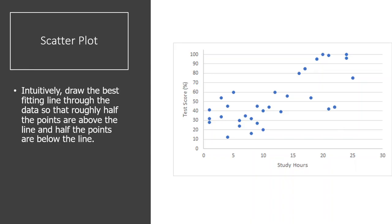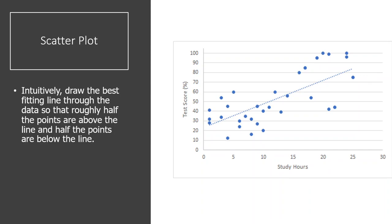Here's a scatter plot. From our correlation lecture, we had study hours predicting a test score. When looking at this scatter plot, you might intuitively draw a line that best seems to fit all the data. The goal of regression is to find the best line — one that does a really good job helping us use the information we have to make predictions. So if somebody says they studied 15 hours, I can be more accurate in my prediction using this line.